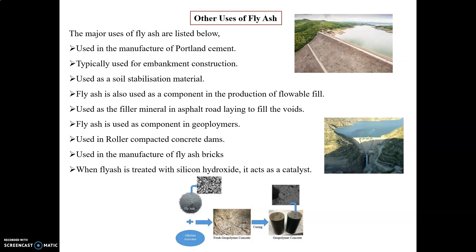Other uses of fly ash: it is used in the manufacture of Portland cement; used for embankment construction such as dams and earthen camps; used as a soil stabilizing material; used as a component in the production of flowable fill; used as filler material in asphalt road lining to fill voids; used as a component in geopolymers; used in roller-compacted concrete dams; and used in the manufacture of fly ash bricks when fly ash treated with sodium hydroxide acts as a catalyst.